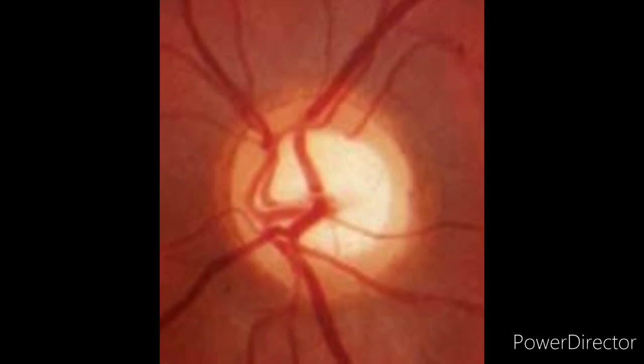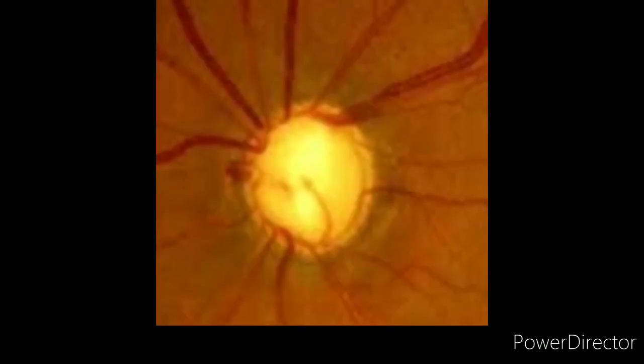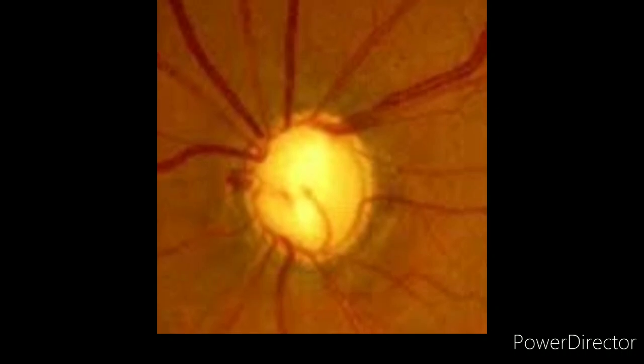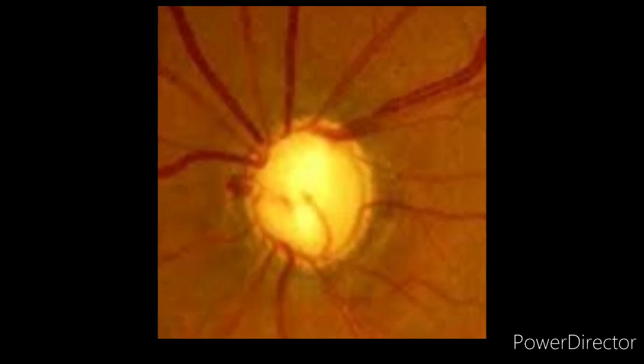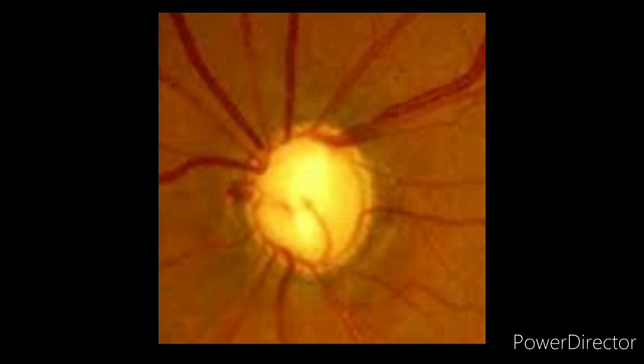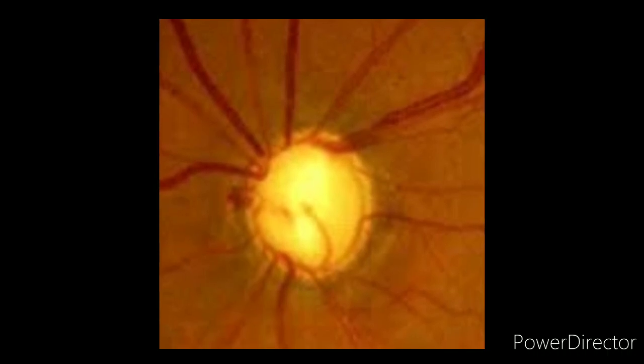And now there's the fourth patient with advanced cupping. You can see the disc is hollow in the center and there is just 0.1. If you divide the circle into 10, only 0.1 area has got the neuroretinal rim—0.9.